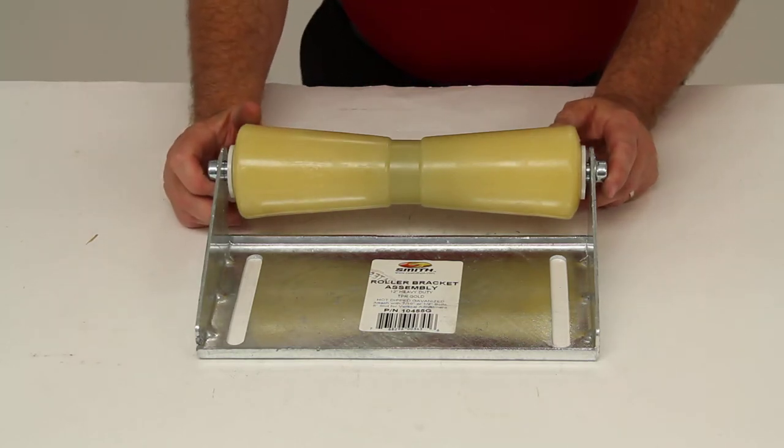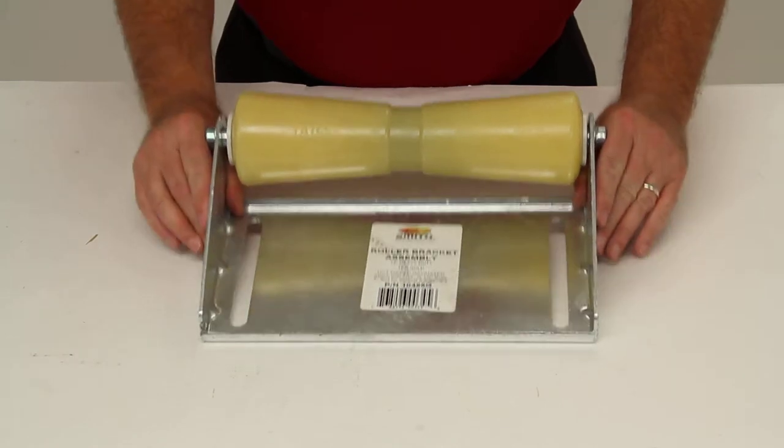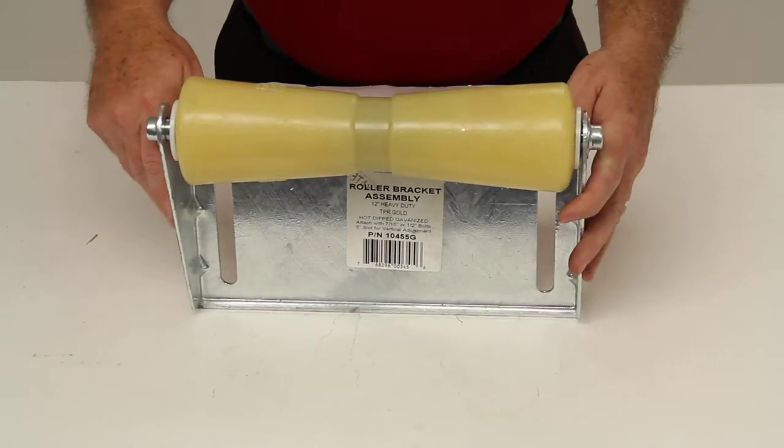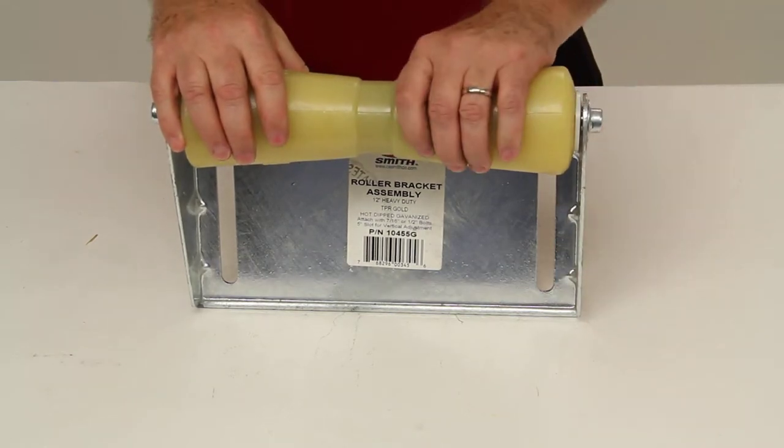Today we're going to review part number CE10455G. This is the CE Smith Deep Veal Keel Roller Assembly for boat trailers.